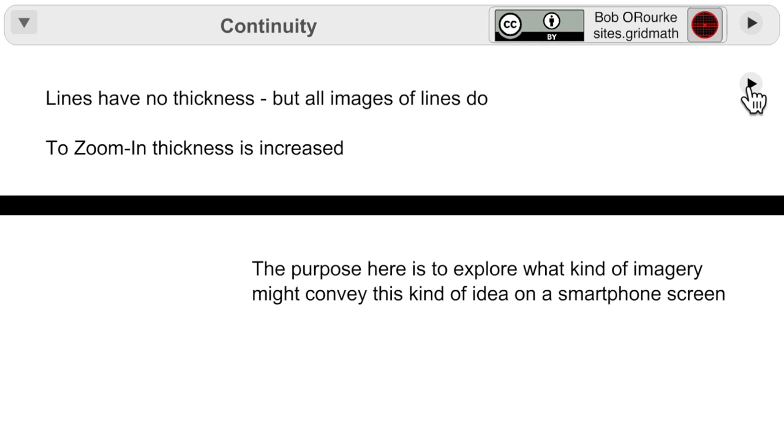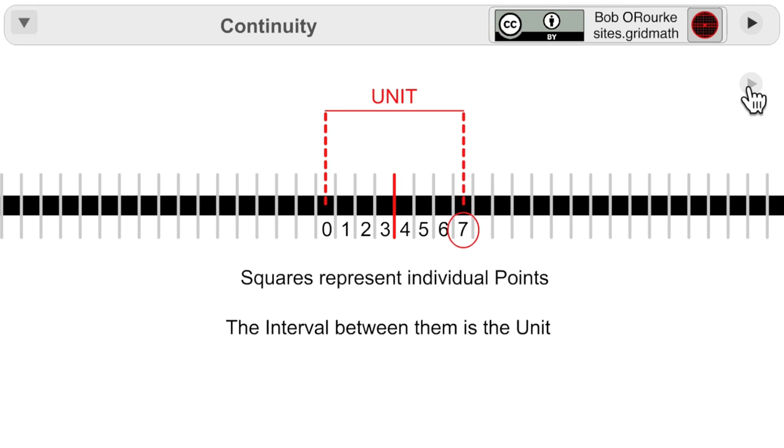The idea is to explore what kinds of images might convey these kinds of ideas about continuity on a smartphone screen. The squares represent points, and the interval between them is the unit.